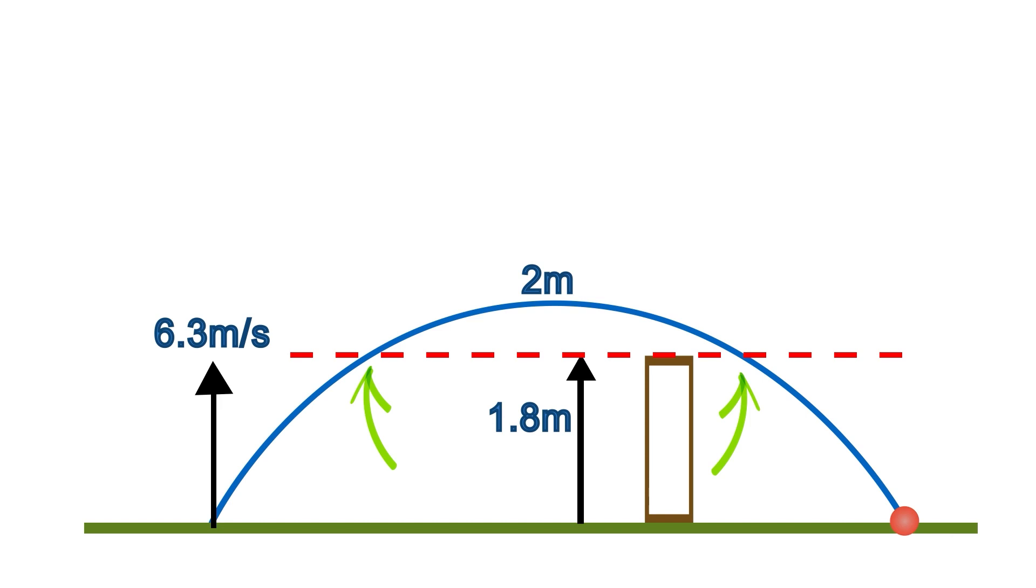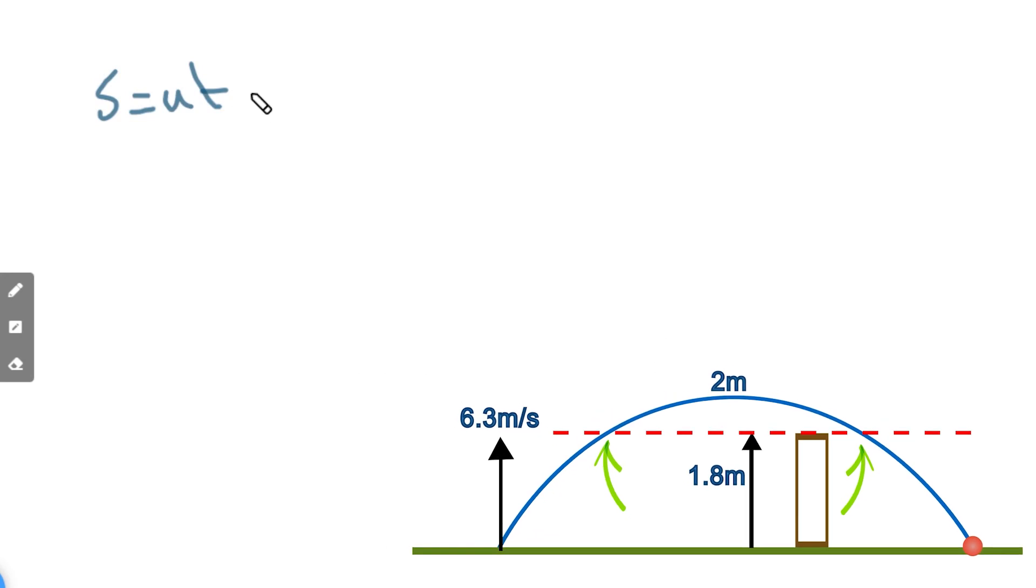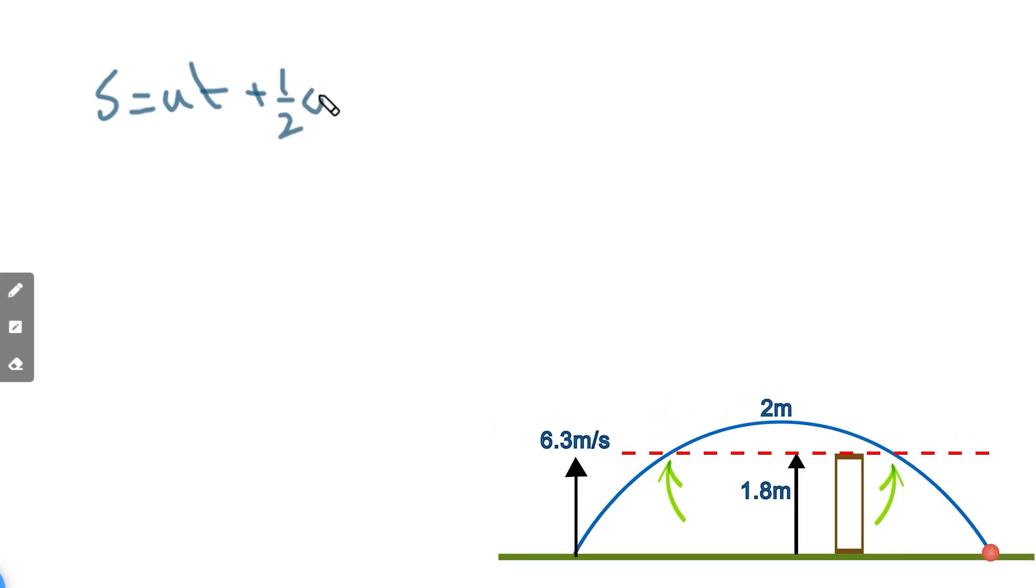Now we're going to start off with s equals ut plus a half at squared. So we're looking for two times and of course this formula is going to give us two times. So our displacement, we're going to set our displacement s to 1.8 meters and look to find both the times when it is 1.8 meters. Our initial speed 6.3 multiplied by t plus a half times minus 9.8 because